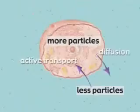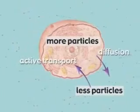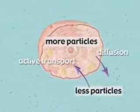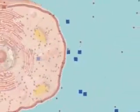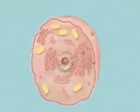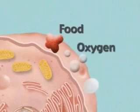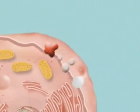Not all materials a cell needs are small enough to simply diffuse into the cell. Cells often need more of a substance than they can get through diffusion. One-third of the energy made by a cell is used for active transport. The energy required for transport is supplied by the mitochondria, which needs food, oxygen, and water to produce this energy.